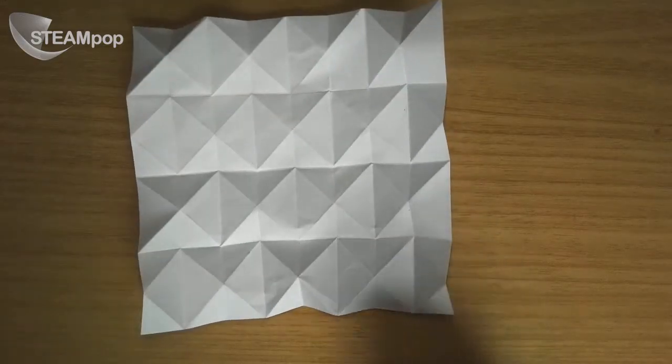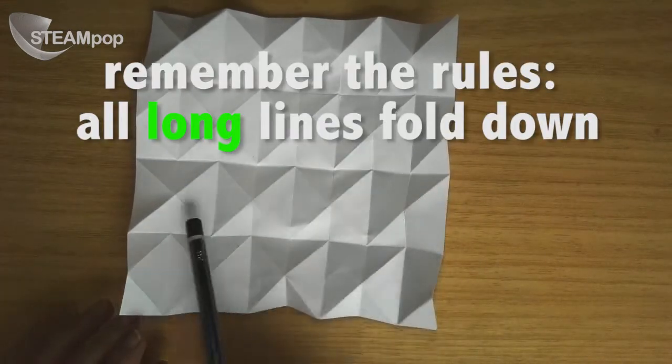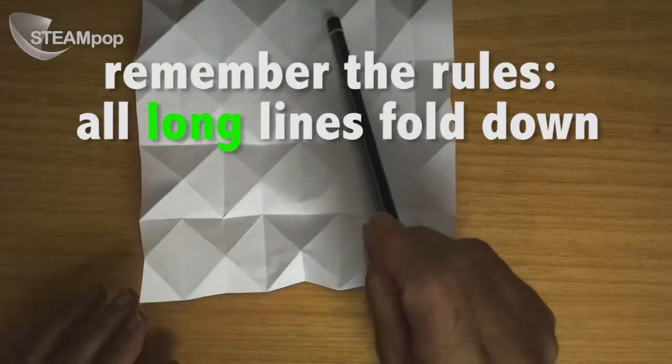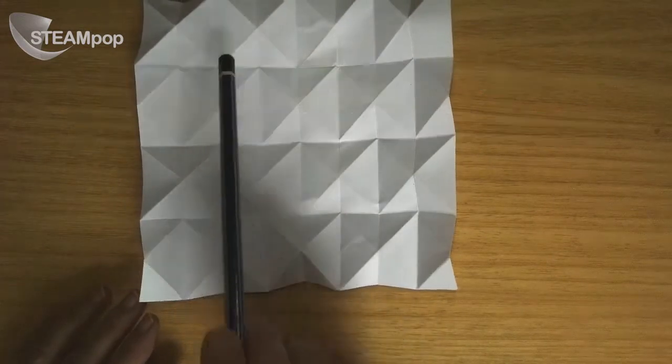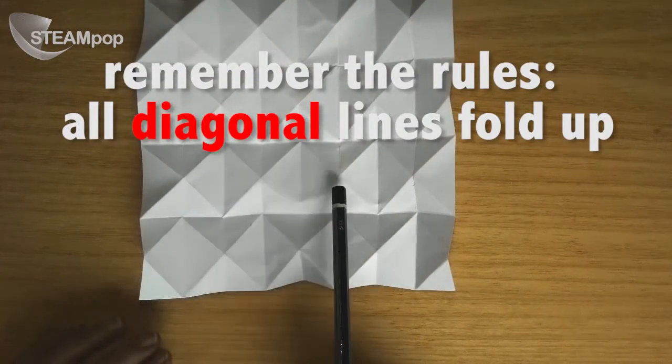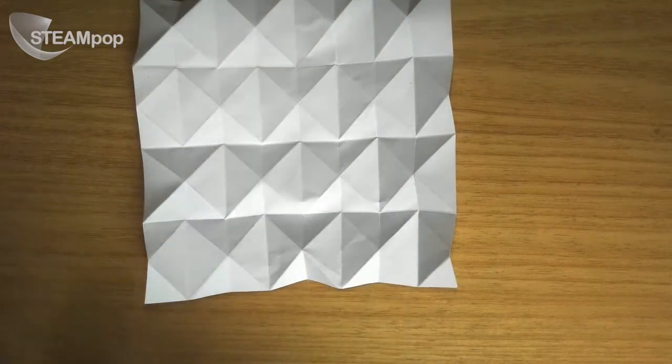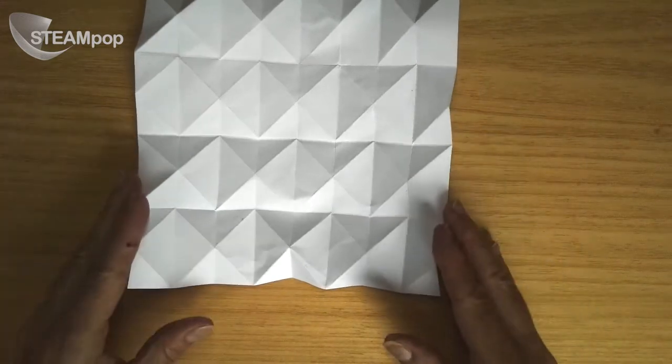What I'd like you to do is make sure you're looking for all the long lines going down. All of these long lines are going to be valleys and all of these diagonal lines are hills. You'll start to see that they look like little roofs.